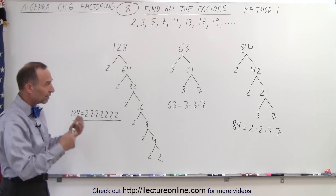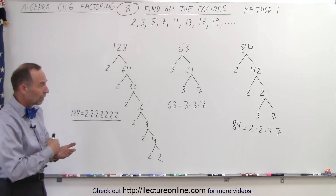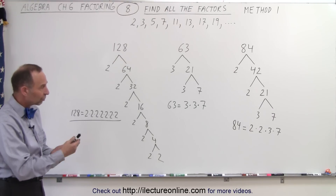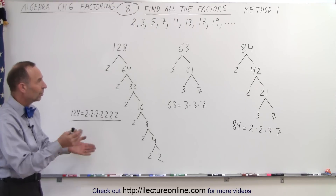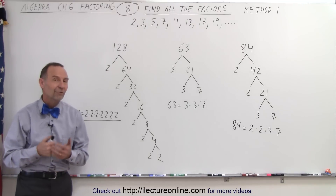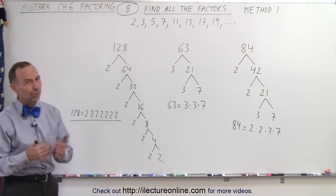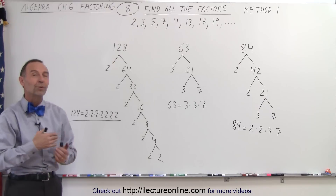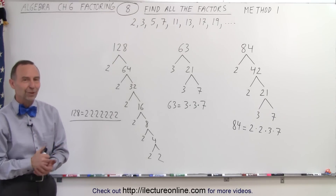So that's the methodology. Start with the smallest prime number, then when it becomes odd, start with the next prime number. Continue doing that until you're all the way done, and that's how you find the factors of a number. That's method 1. We have another method, which we're going to show you in the next video.